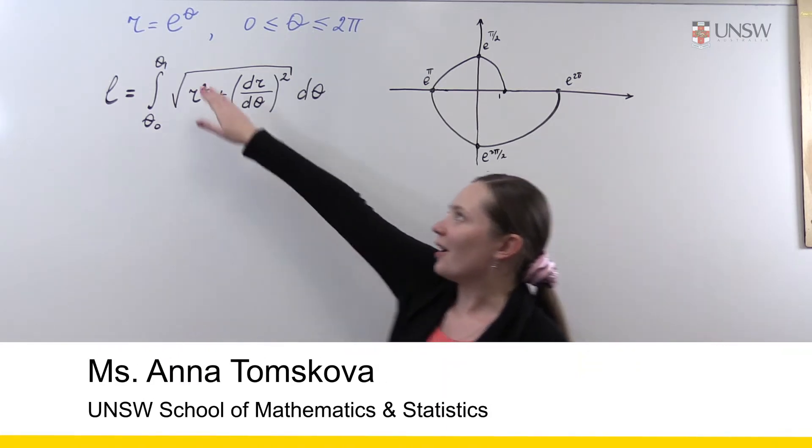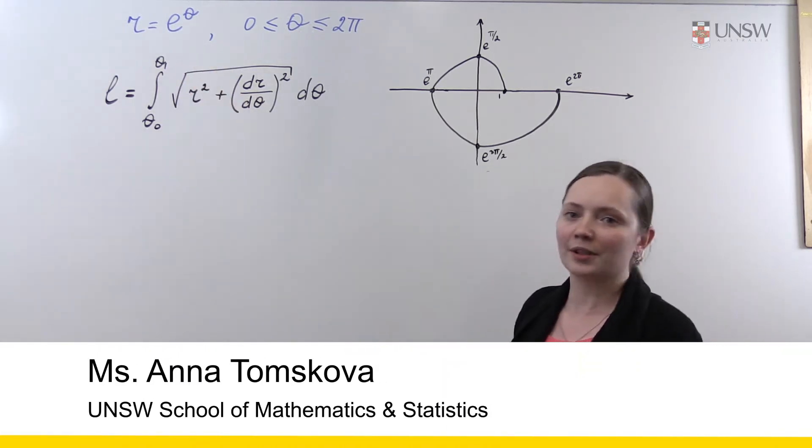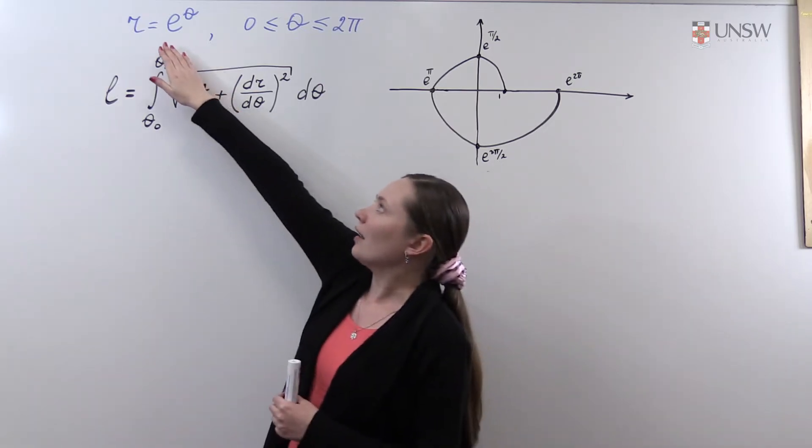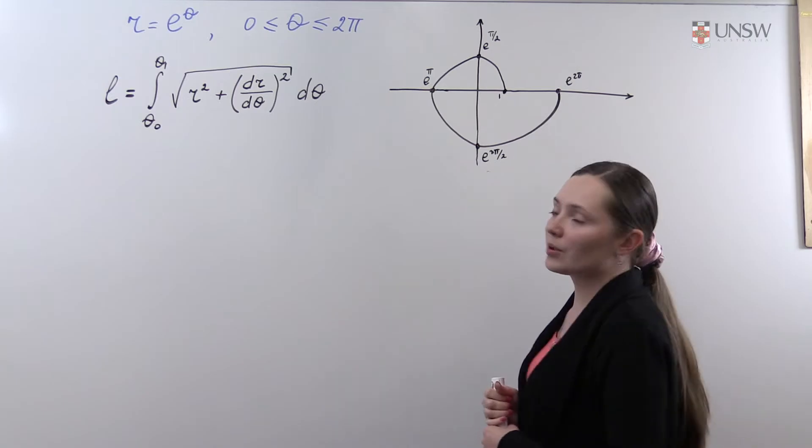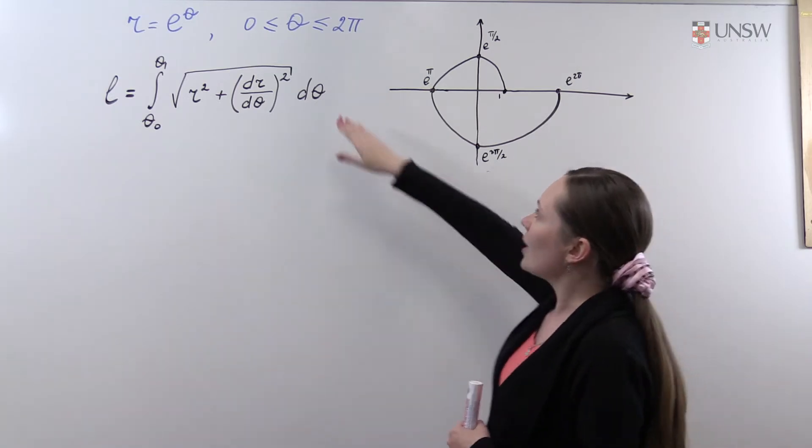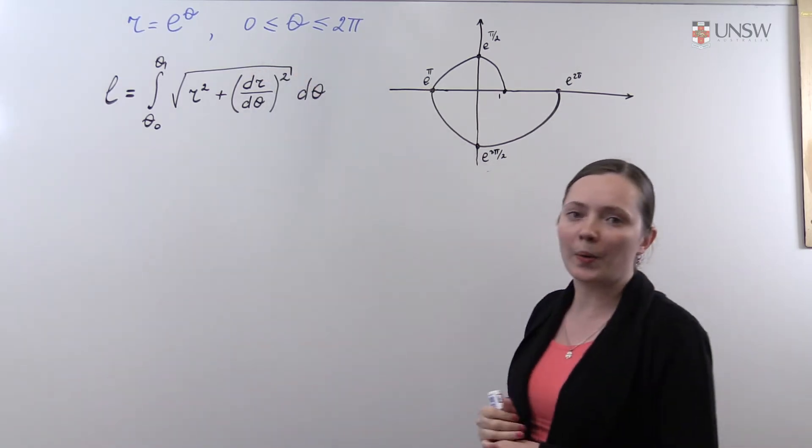The problem is to find the length of the curve given in polar coordinates by the formula r equals e to the power of theta, with theta ranging from 0 to 2π.